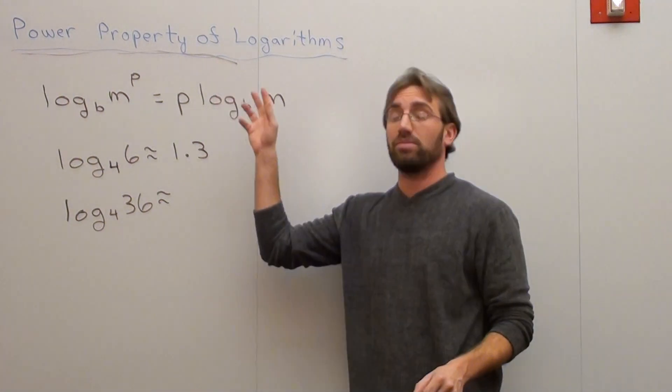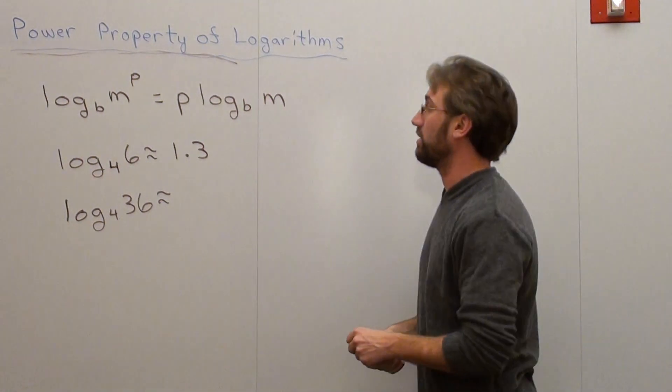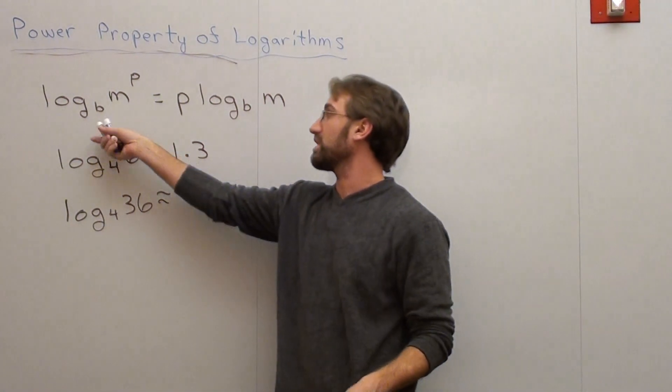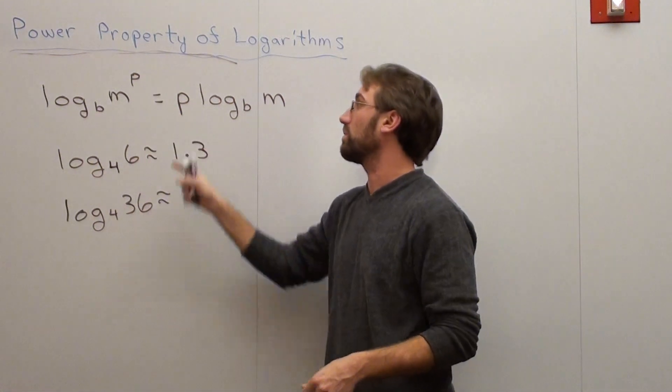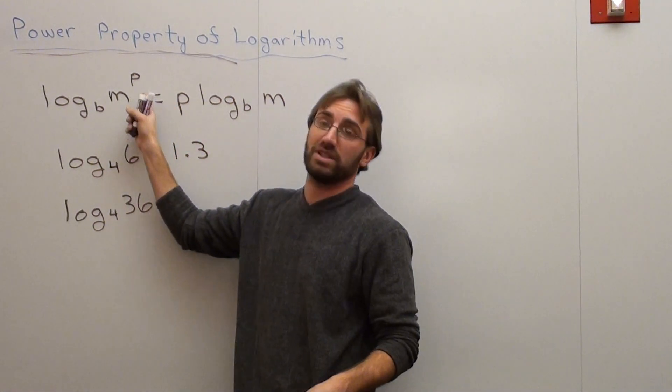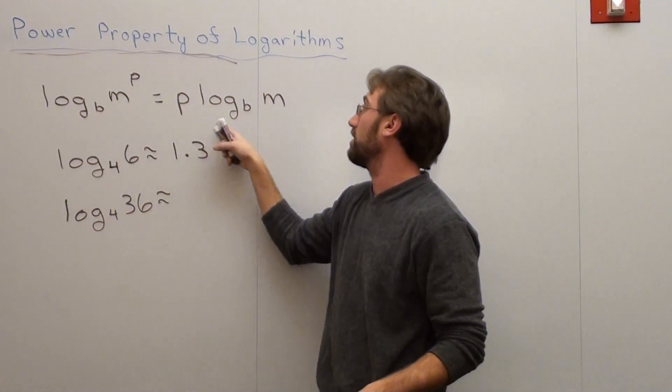Hello again, we're doing the power property of logarithms now, which basically states that the log base b of m to the p equals p log b of m. All that happens is that the exponent just comes out in front.